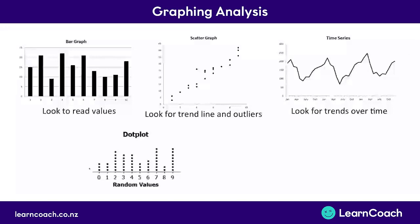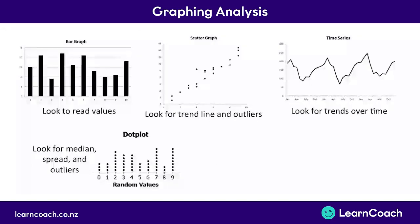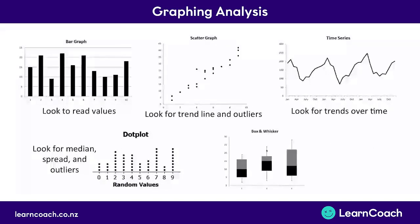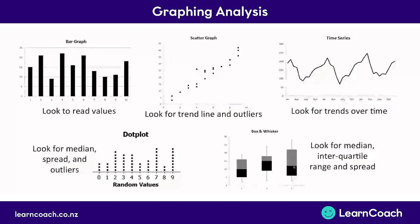The fourth graph was a dot plot. In a dot plot, you needed to look for the median, the spread — how spread out the data was — and you could immediately see whether there were any outliers. The median was the best measure of average. The final graph was box and whisker plots. In a box and whisker graph, we compared the medians, the middle line of each graph, and we also looked at the interquartile range — the spread from the lower quartile to the upper quartile — to assess how variable the data was.